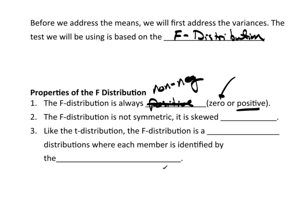The F distribution is not a symmetric distribution. It's not like the normal distribution. It's actually skewed right. And just like the T distribution, the F distribution is actually a family of distributions where each member is identified, just like the T distribution, by the degrees of freedom.